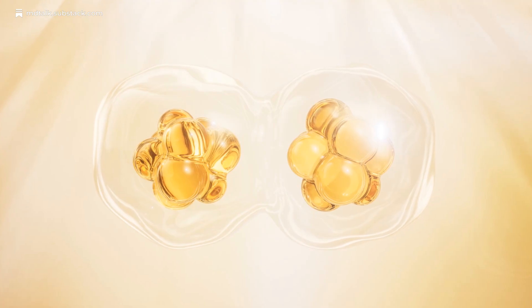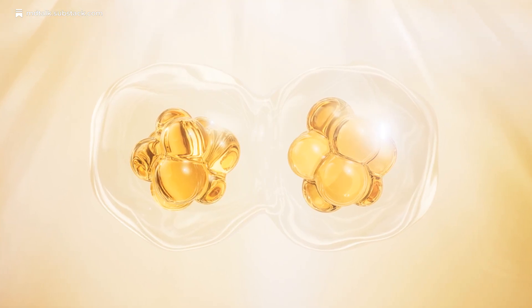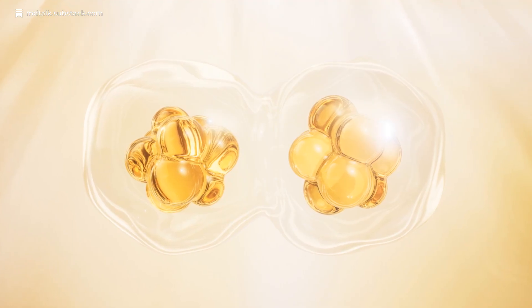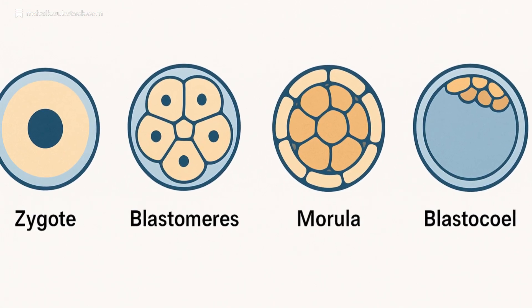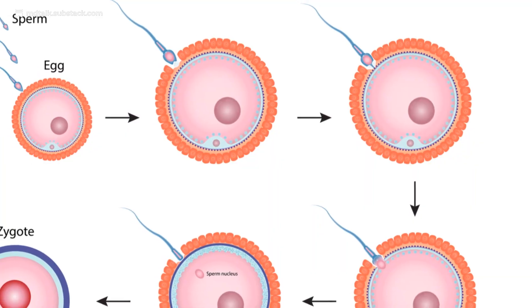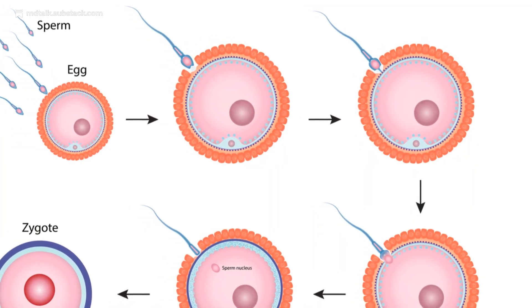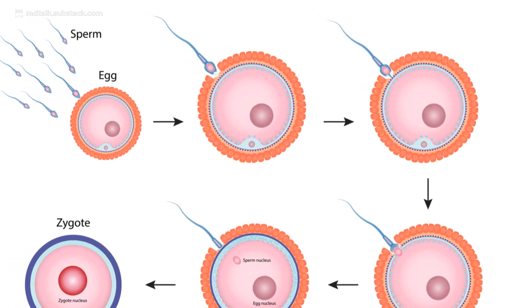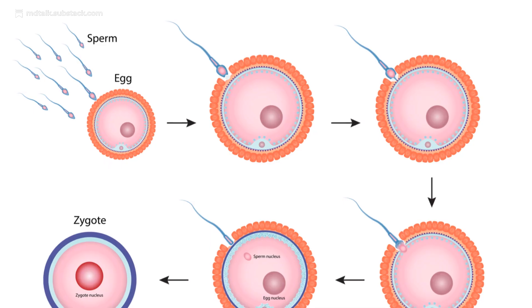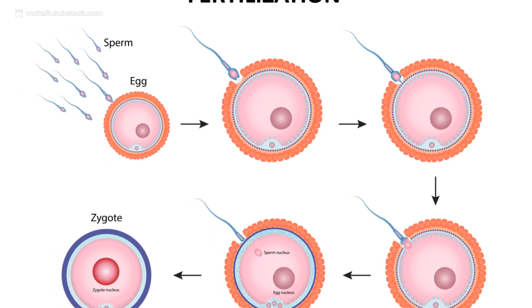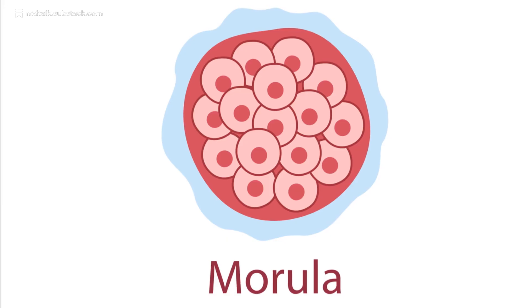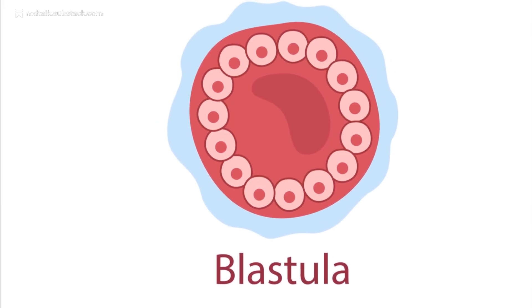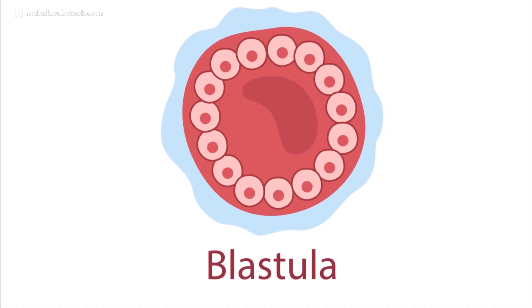After fertilization, the zygote undergoes cleavage, a rapid series of mitotic divisions that produce smaller cells called blastomeres without increasing the embryo's overall volume. These divisions transition the embryo from a zygote to a morula, and finally a blastula containing a fluid-filled cavity known as the blastocoel.